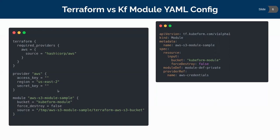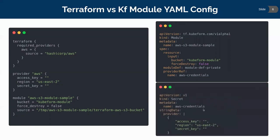Provider ref references the provider block — all the credentials we need are provided in a Kubernetes secret named AWS credentials. Under the string data field of that secret, we give the provider field with the exact same configurations needed in Terraform: access key, region, and secret key — in JSON format. This is the complete QFM module configuration equivalent to the Terraform module configuration.